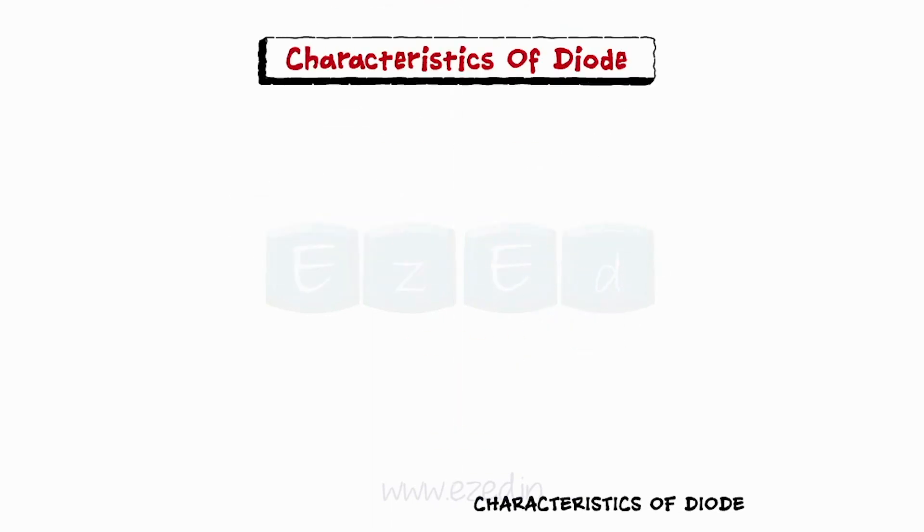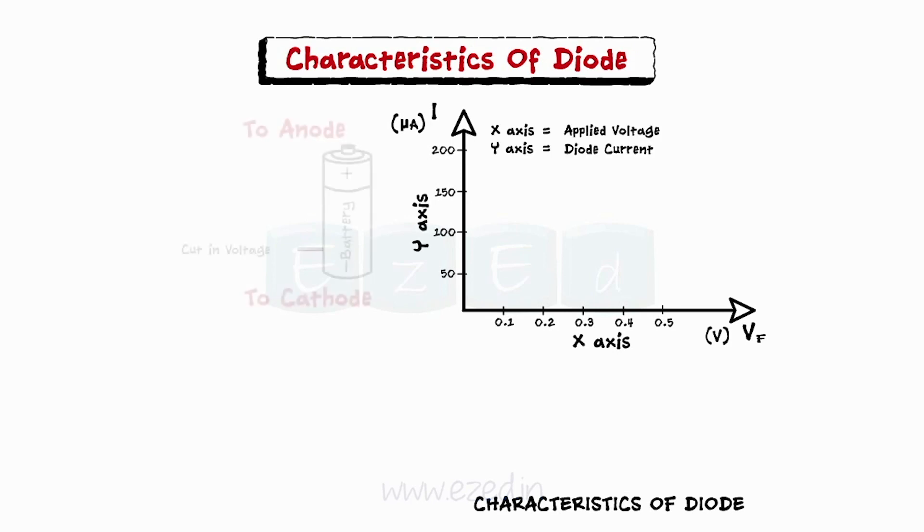Let's study the characteristics of this diode. This graph is drawn by considering external applied potential on the X axis and current flowing through the diode on the Y axis.